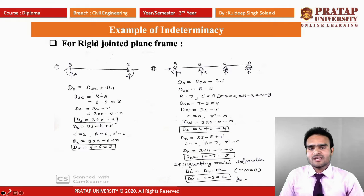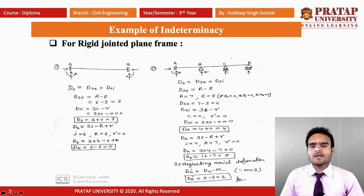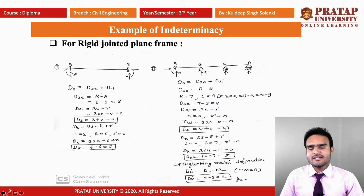These are some examples of indeterminacy. The first example is a fixed beam. In this lecture, all examples are for rigid jointed plane frames. Rigid jointed means all the members are connected by rigid joints, and plane frame means just 2D. We calculate DS and DK both — DS means static indeterminacy and DK means kinematic indeterminacy. So first we calculate DS.